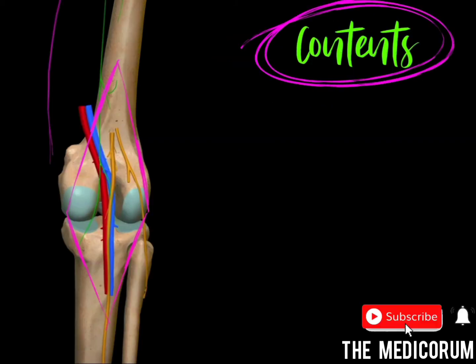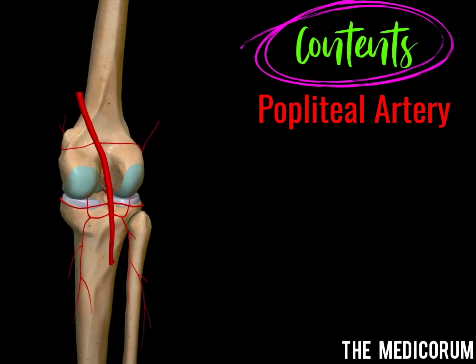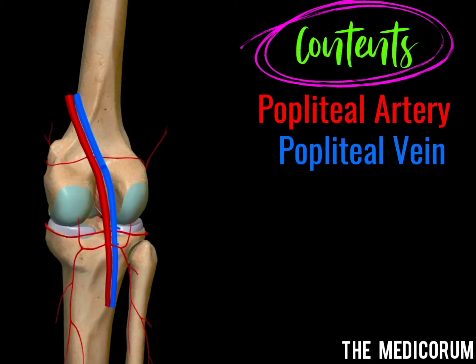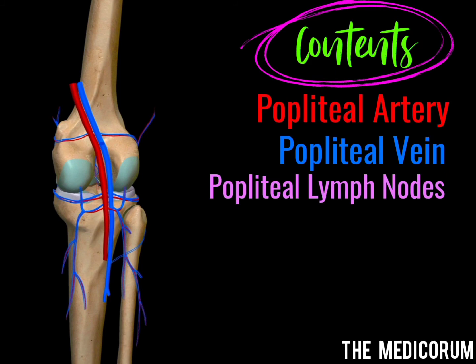Looking at the contents of the popliteal fossa. As we have the word 'popliteal,' some of the contents will include 'popliteal' in their name. Firstly, we have the popliteal artery and its branches. Then we have the popliteal vein and its tributaries. The third is the popliteal lymph nodes. These three contents are easy to remember. For the remaining contents, use the mnemonic TCPG.